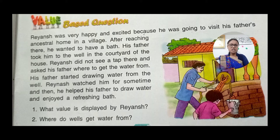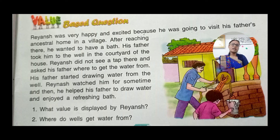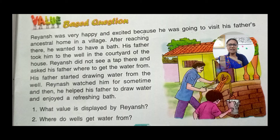So in this story, Riyanj was very happy and excited to go to his father's ancestral home. When he reached there, he wanted to have a bath. His father took him to the courtyard well. Riyanj saw there was no tap, so his father drew water from the well. Riyanj then helped his father to draw the water and enjoyed a good bath.